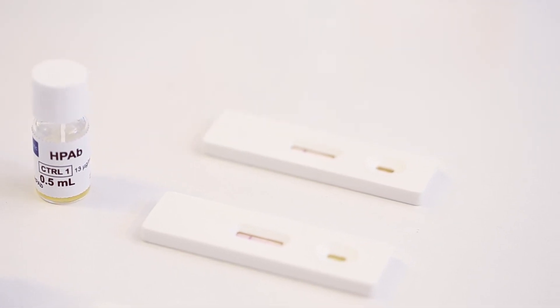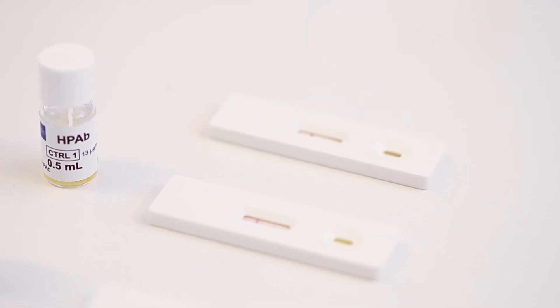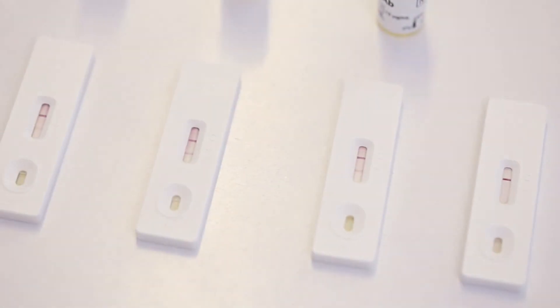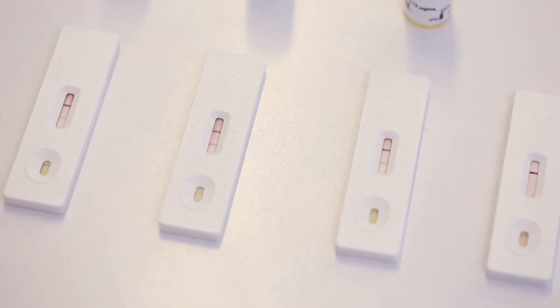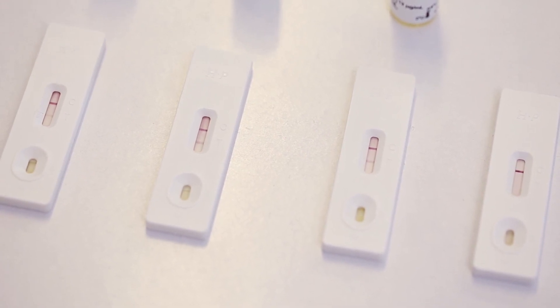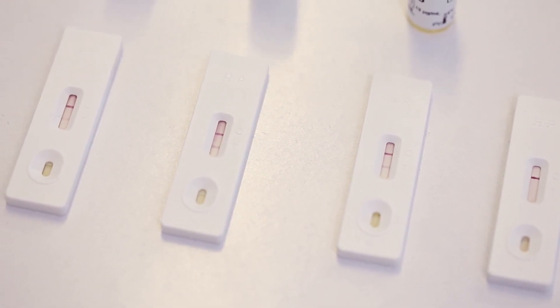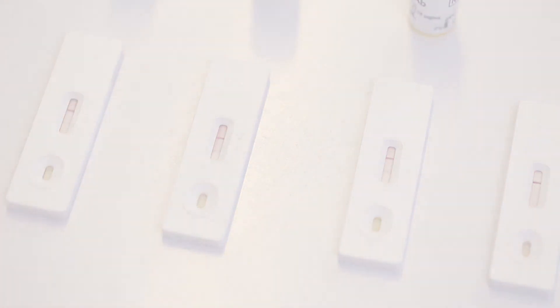For the patient's serum test, the result is negative because we can only visualize the control line. The test line is not visible. The patient does not have H. pylori antibodies in the serum.